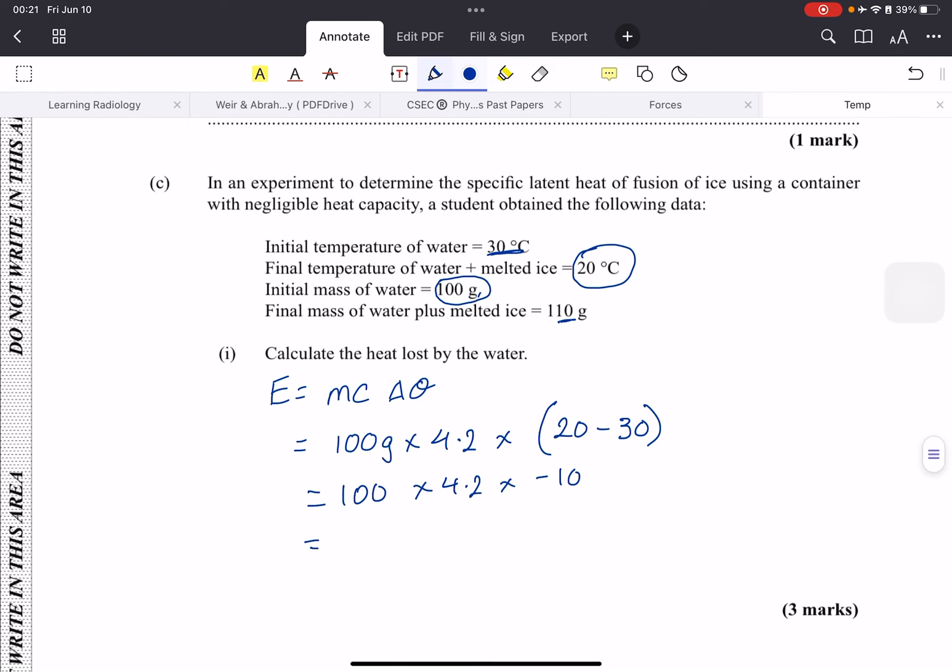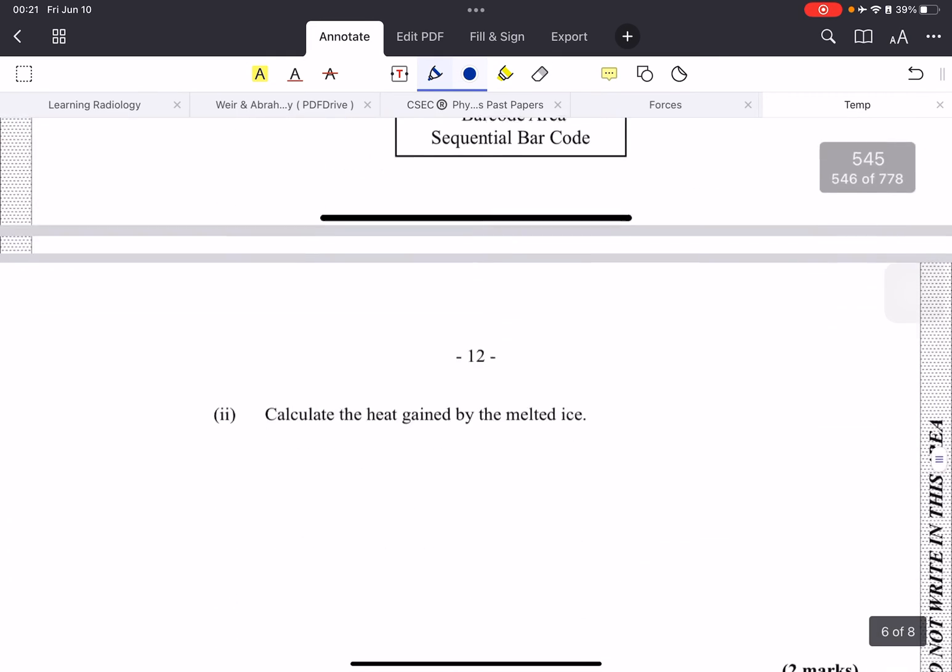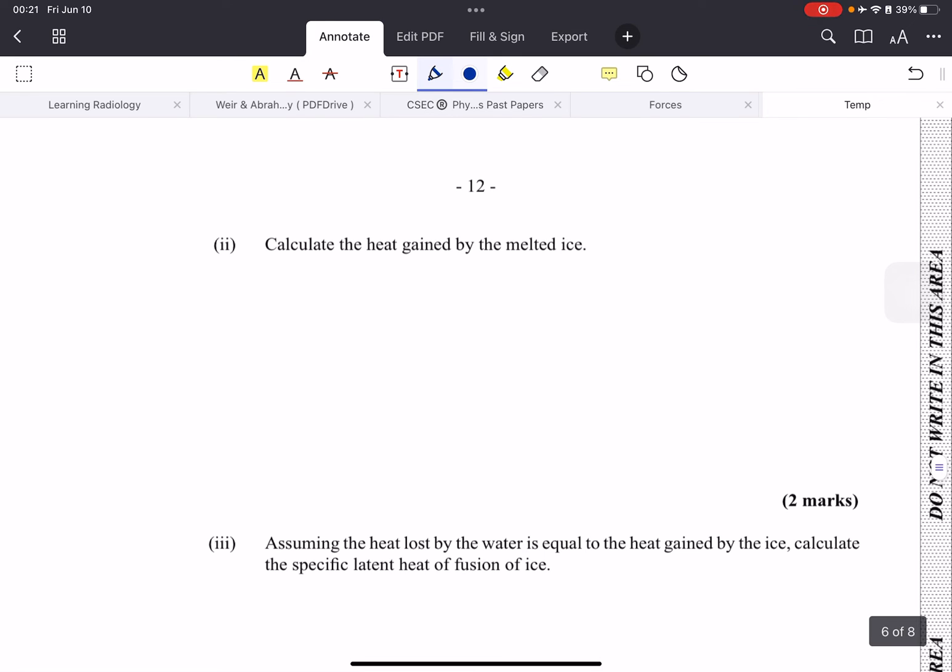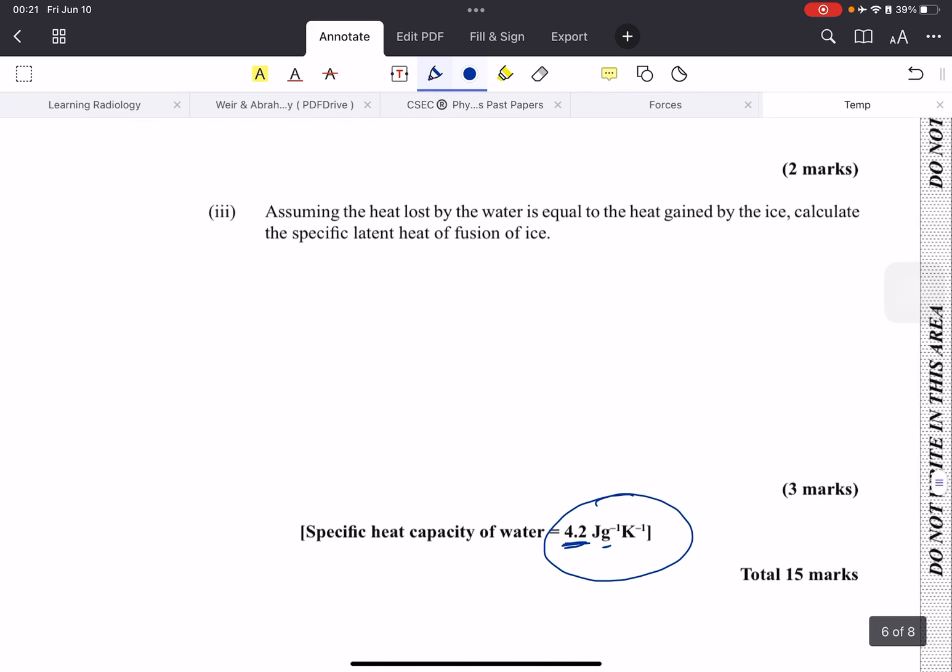That is going to give us negative 4200 joules, and it's negative because it's heat lost. The heat gained by the melted ice—you don't need to calculate anything for that because heat lost by water is equal to heat gained by ice. So it's 4200 joules; it's positive this time. And look, they kind of give over the answer there: assuming the heat lost by the water is equal to the heat gained by the ice, calculate the specific latent heat of fusion of ice. So that's what this experiment was trying to determine.